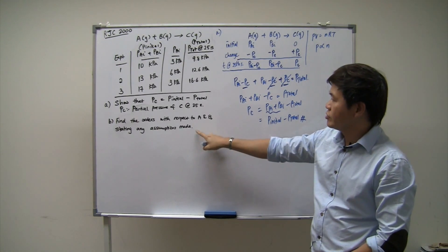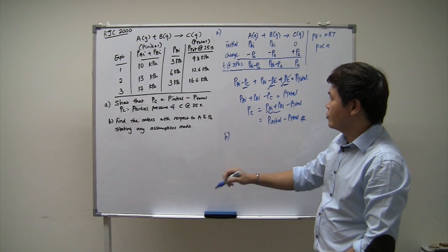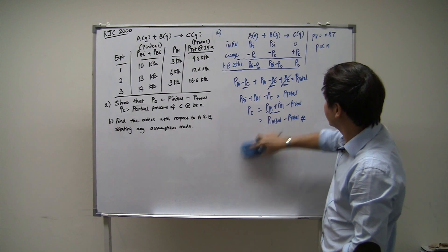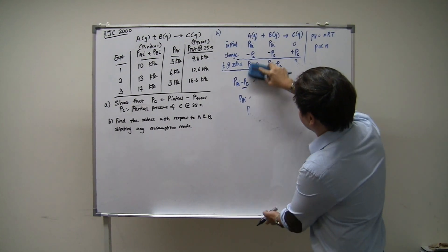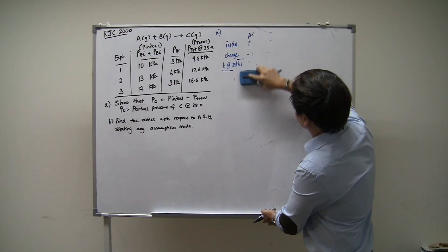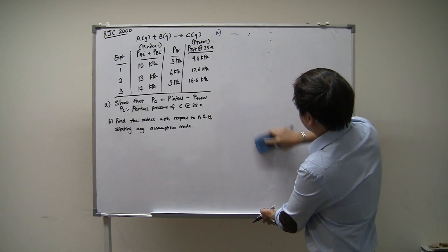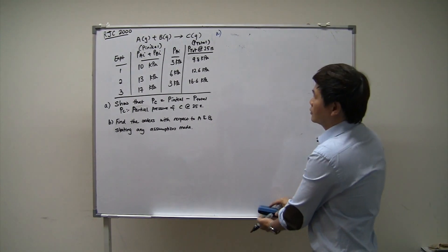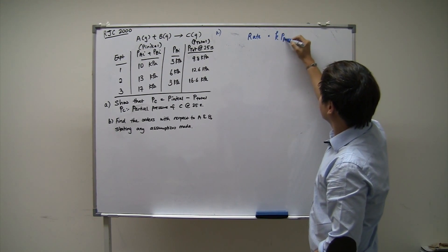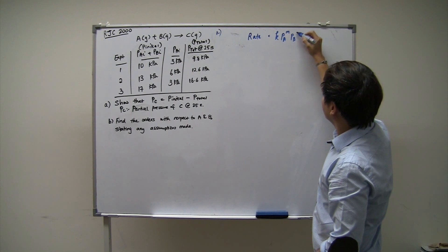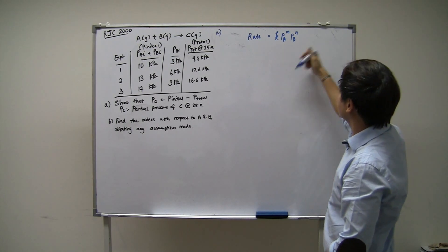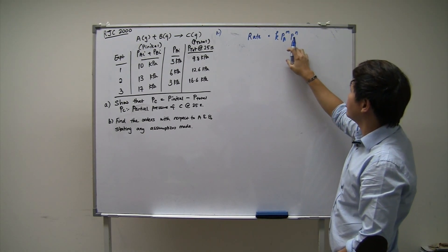Now let's look at part B, which is the really interesting part. We need to find the orders with respect to A and B. The rate equation for this reaction is: rate = k × PA^M × PB^N. Normally we express the rate equation in terms of concentration, but because it's a gas phase reaction, we can express it in terms of partial pressures instead.